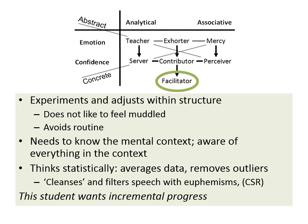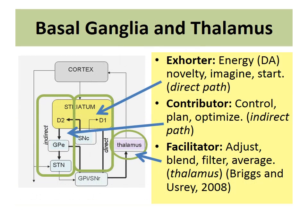If there is too much change, the facilitator person feels muddled; if there is no change, the facilitator person wants to avoid the routine. Looking now at the brain: we saw previously that the four simple styles relate to the cortex. The three composite styles use this cortical information — they access the same memory but do not live in it the way simple styles do. The processing of the composite styles occurs in a loop that goes through the basal ganglia, through the thalamus, and back to the cortex.